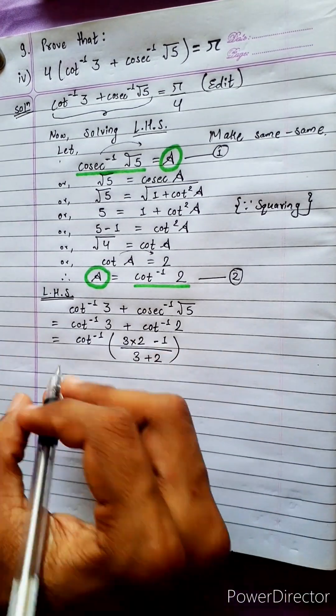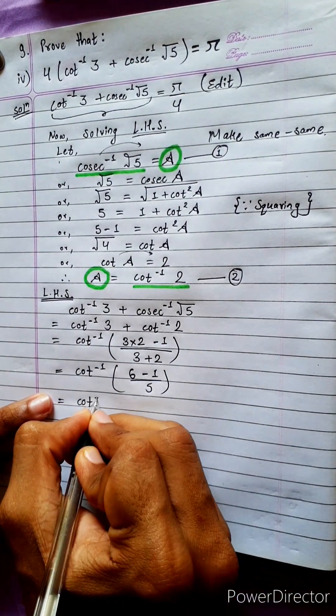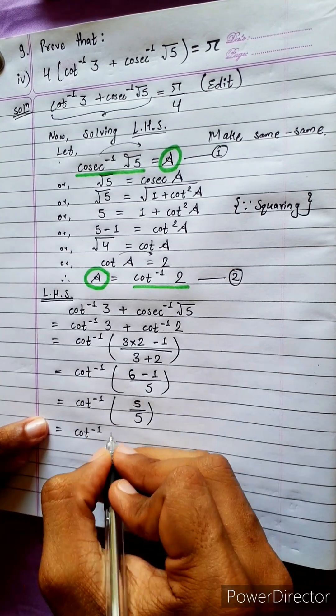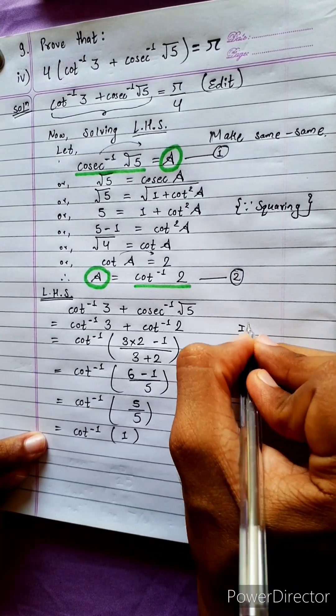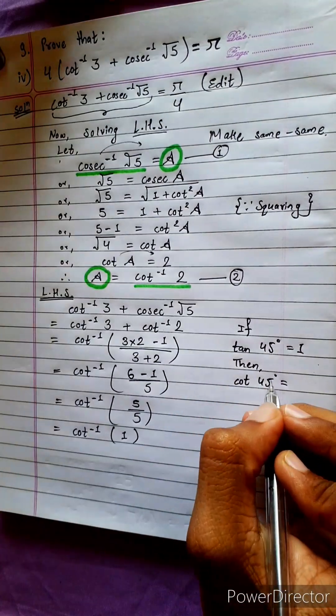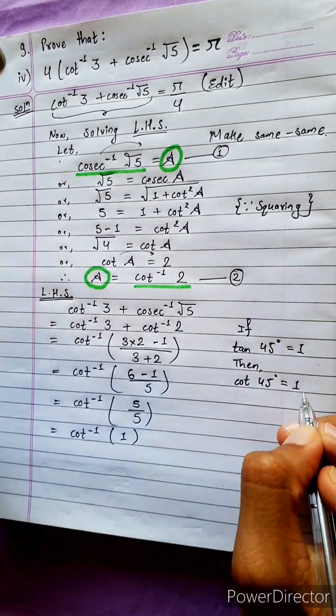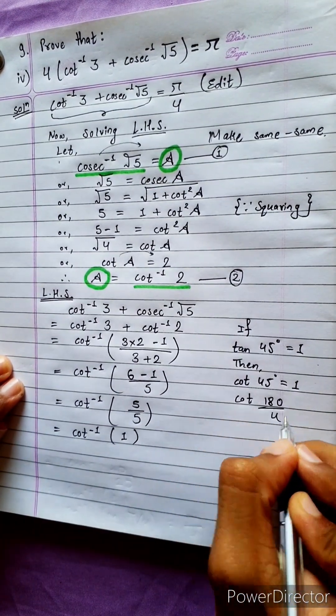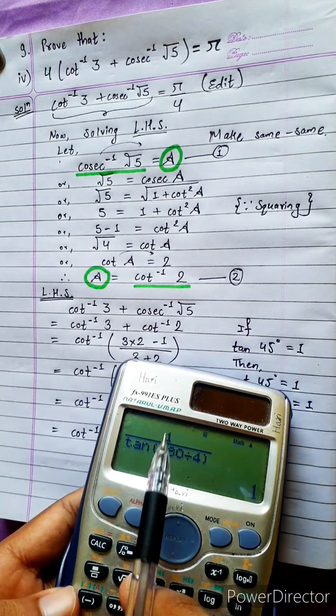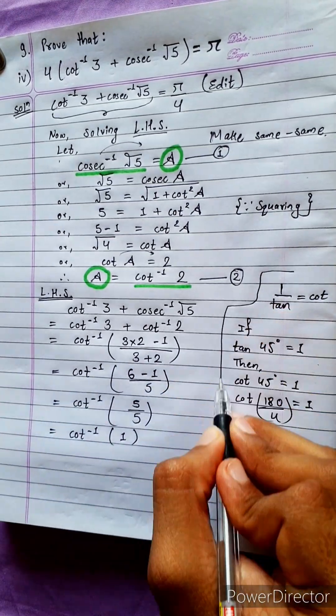Equals to cot inverse 6 minus 1 by 5 equals to cot inverse 5 by 5 equals to cot inverse 1. Now if cot 45 degree equals to 1 then cot 45 degree equals to also 1. So in place of 1 we can write cot pi by 4 equals to 1.